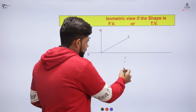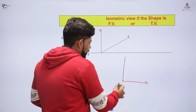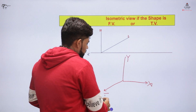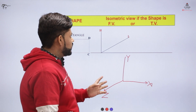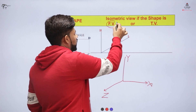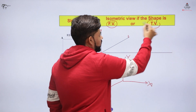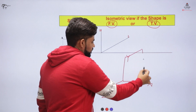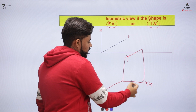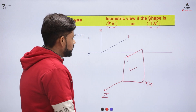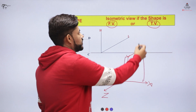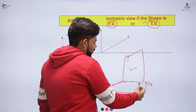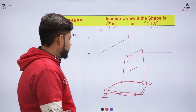We have three axes: the x-axis, y-axis, and z-axis. We'll be making two views — the front view and the top view. For the front view we use one plane, and whenever we need to make the top view we use a different plane.